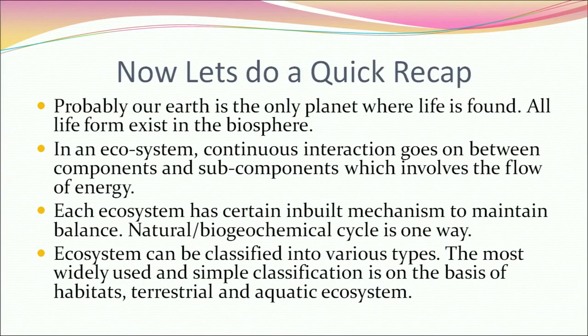To recap: Earth is probably the only planet where life is found, and all life forms exist in the biosphere. In an ecosystem, continuous interaction between components and subcomponents involves the flow of energy, and each ecosystem has certain inbuilt mechanisms to maintain balance. Natural biogeochemical cycles are one such way. Ecosystems can be classified into terrestrial and aquatic types on the basis of habitats. Thank you learners for listening patiently. Hope the session was fruitful. Good luck to you all.